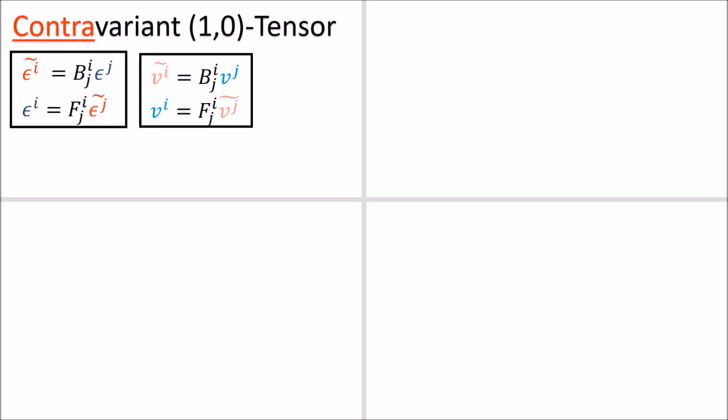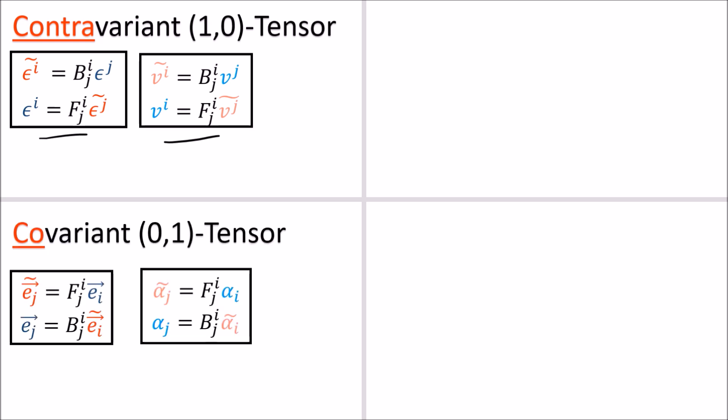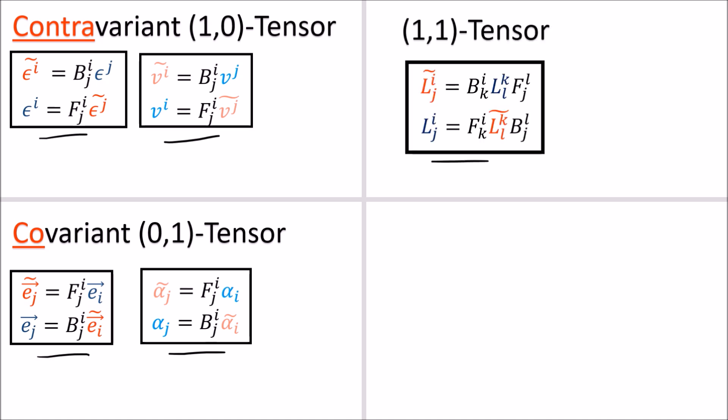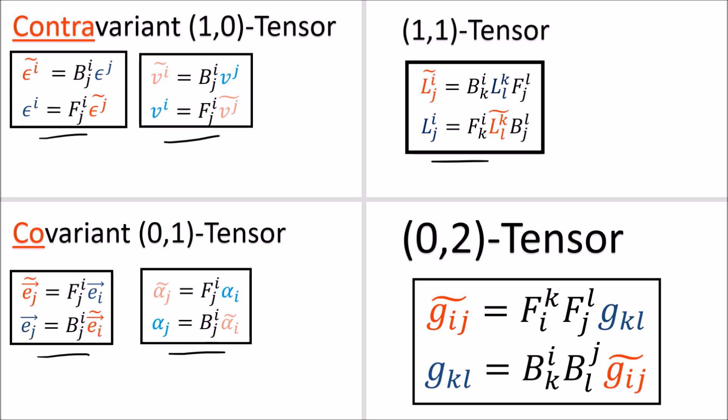Summing up everything we've learned in this video series: we've learned about the contravariant transformation rule, which applies to basis co-vectors and vector components — these are called 1-0 tensors. We've learned about the covariant transformation rule, used for basis vectors and co-vector components — called 0-1 tensors. We've learned about linear maps, which are 1-1 tensors transforming using one contravariant rule and one covariant rule. And finally, we learned about the metric tensor, which is a 0-2 tensor because it transforms using two covariant rules.